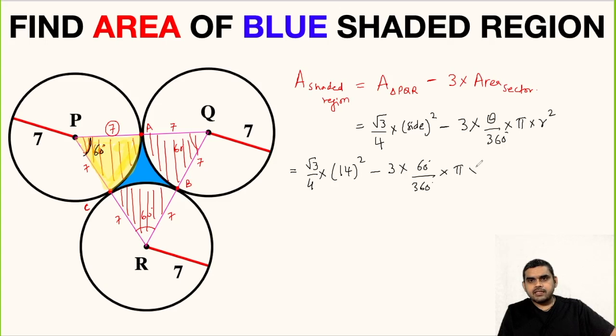So this will be: root 3 upon 4, multiplied with 14 squared is 196, minus—this will get cancelled 6 times, 2 times—so here it will be 49 pi upon 2.